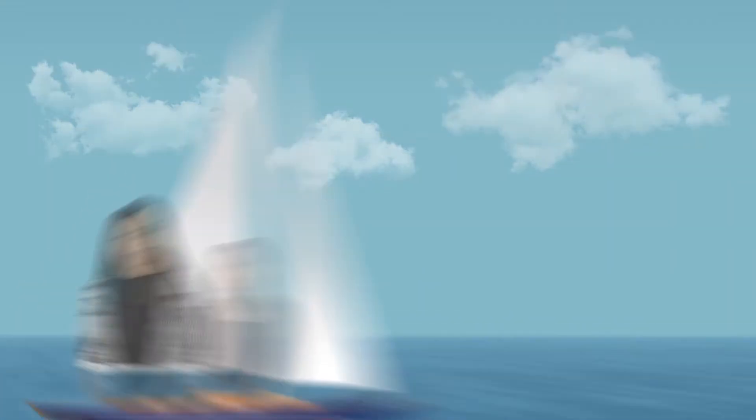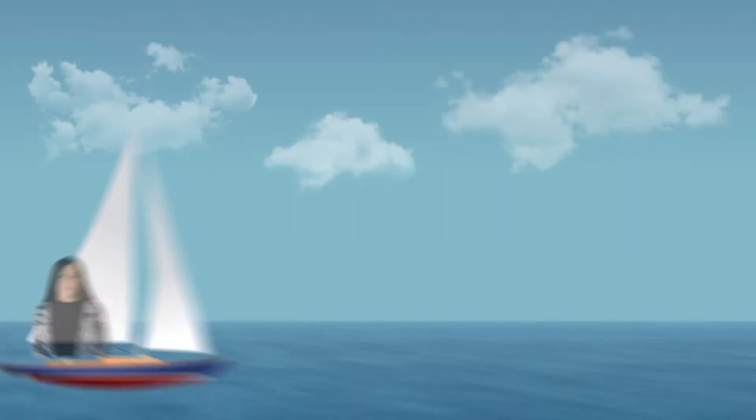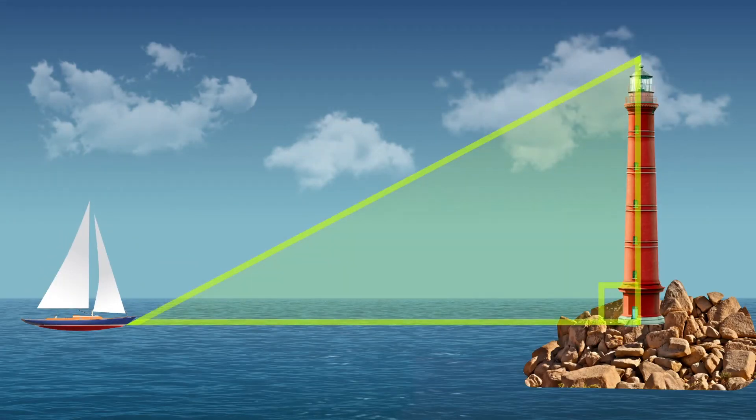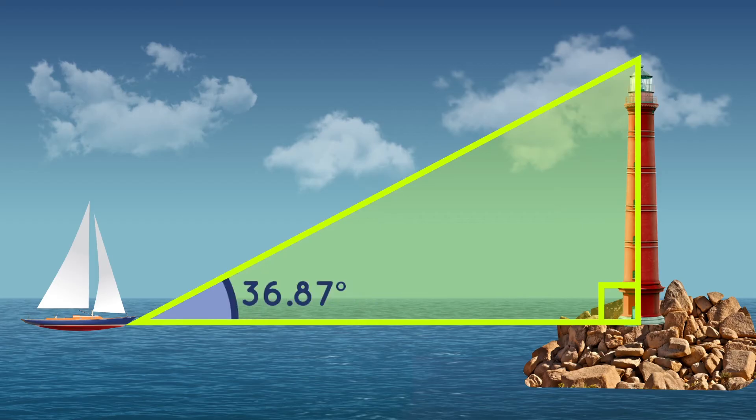First, we need to list what we know. Well, we know the lighthouse is 60 feet high, and the angle from our boat to the top of the lighthouse is 36.87 degrees. So let's fill in what we have. We have this angle here, and we know the height, which in this case is the opposite.